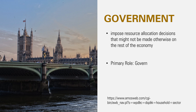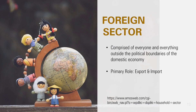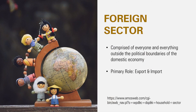Next is the government. They impose resource allocation decisions that may not be made by the rest of the economy — they moderate and monitor. Their primary role is to govern. Last is the foreign sector, also referred to as the rest of the world, which is also an acceptable term. They comprise everyone and everything outside the political boundaries of the domestic economy, and their primary role involves exports and imports.